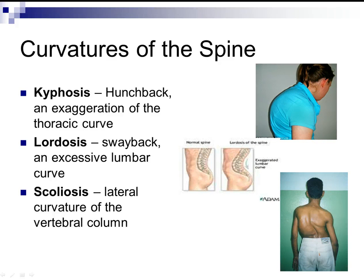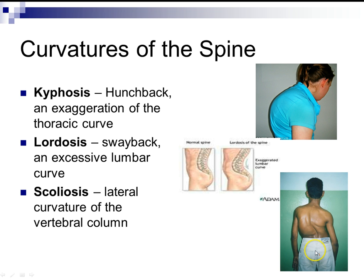Curvatures of the spine: Kyphosis, or hunchback, is an exaggerated outward curvature of the thoracic spine. Lordosis, or swayback, is an excessive inward curvature of the lumbar spine. Scoliosis is a lateral — side-to-side — curvature of the vertebral column, creating an S-shape, which can cause issues with internal organs and space for the heart and lungs in the thoracic cavity.